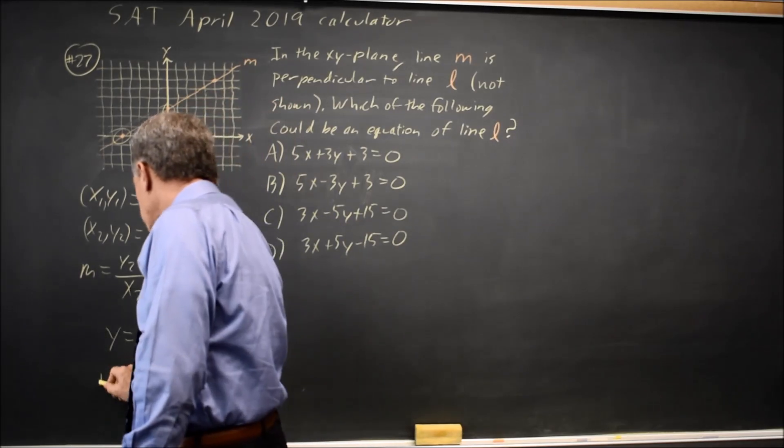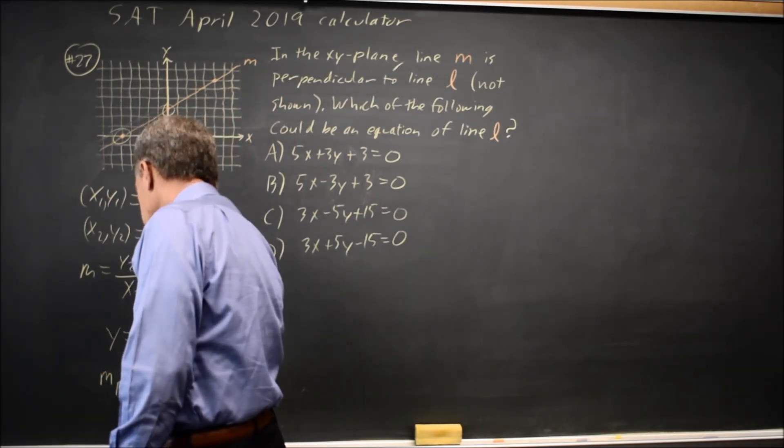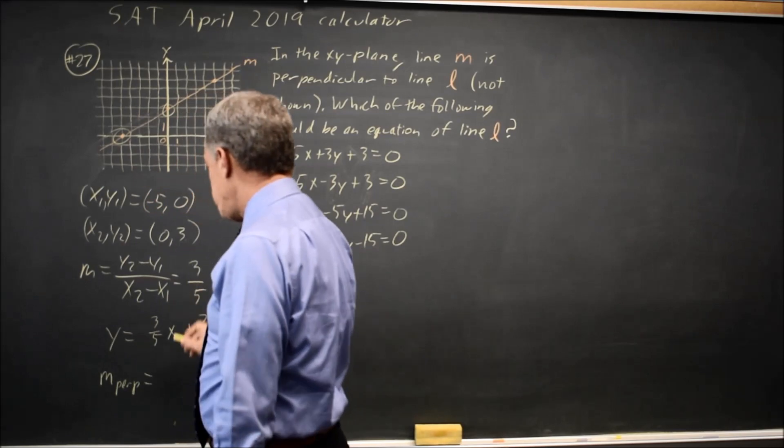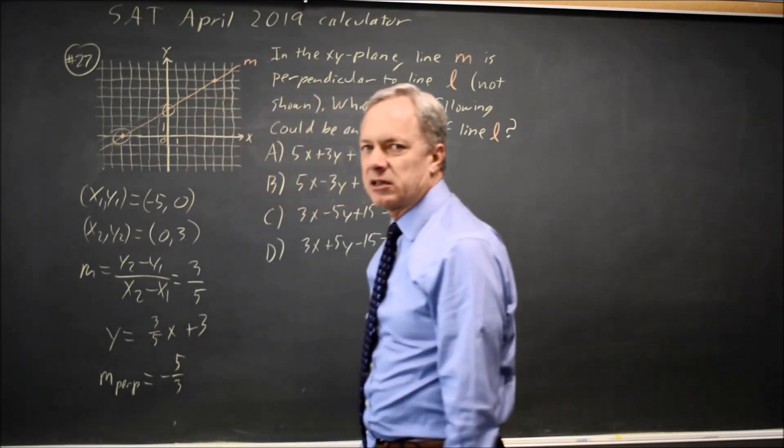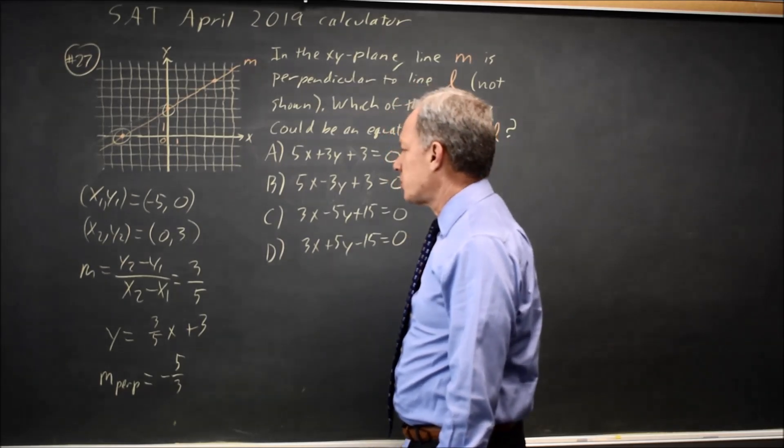The slope of a perpendicular line will be flip this slope, so 5 thirds instead of 3 fifths, and make it negative. So negative 5 thirds would be the slope of a perpendicular.